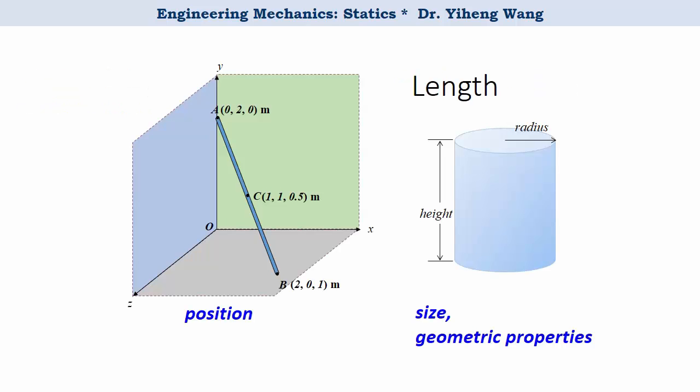The first one, length, can be used to describe the position in space, the size of a physical system, and the geometric properties of a body. Like demonstrated on the left, we can describe the positions of the end points and the middle point, points A, B, and C on the rod, by three sets of numbers known as the coordinates of these points. The coordinates are the three lengths measured from the origin, along the x, y, and z direction respectively, in the established rectangular coordinate system.